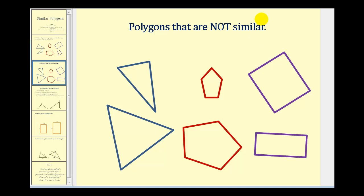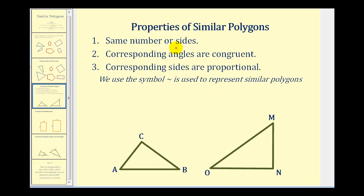Now let's talk about the properties of similar polygons. First, similar polygons must have the same number of sides, and that should be pretty straightforward — there's no way a triangle is going to be similar to a rectangle, pentagon, and so on. These next two properties are key: number two, the corresponding angles are congruent. This idea of corresponding parts is extremely important when working with similar polygons.